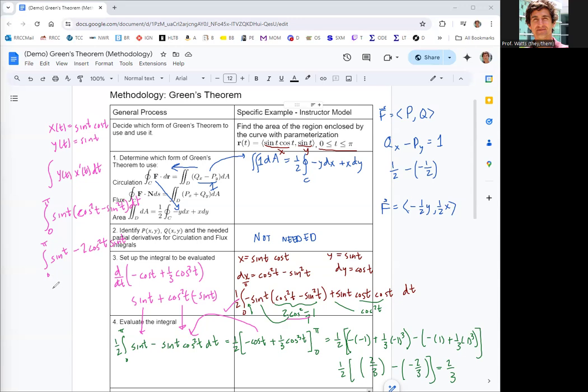And then the antiderivative of sine is negative cosine. And then here we have plus two-thirds cosine cubed. Evaluating at pi, we get negative one, so that's one minus two-thirds again, which is two-thirds. Evaluating it at zero, cosine of zero is positive one, and we get negative one plus two-thirds.